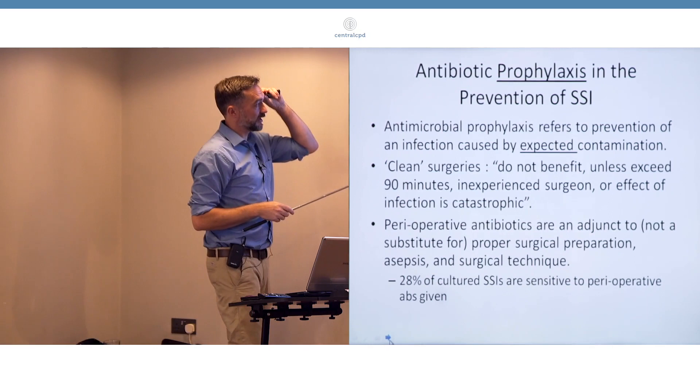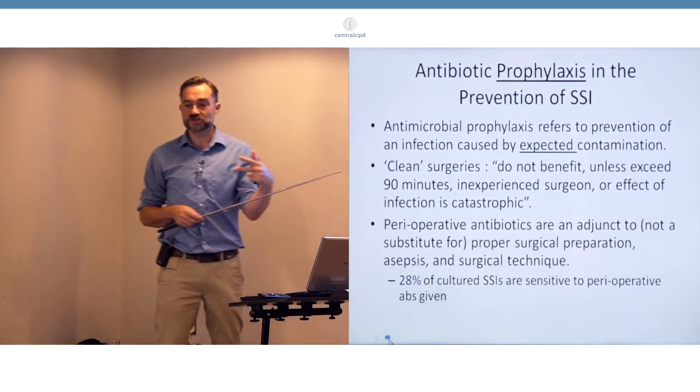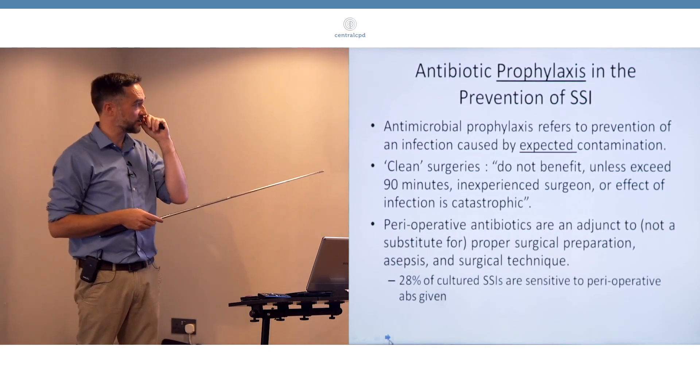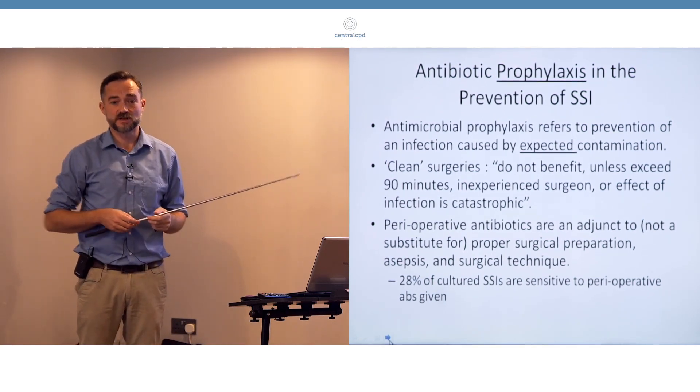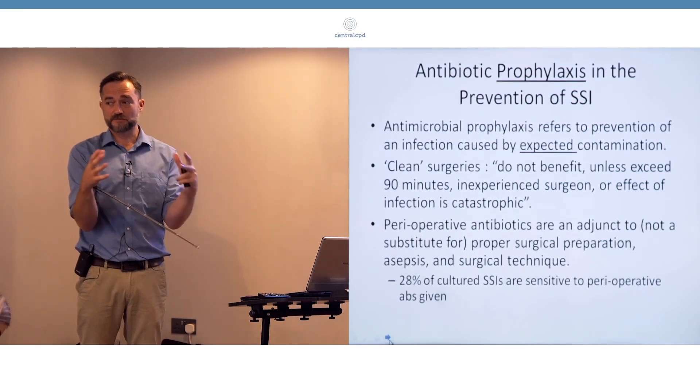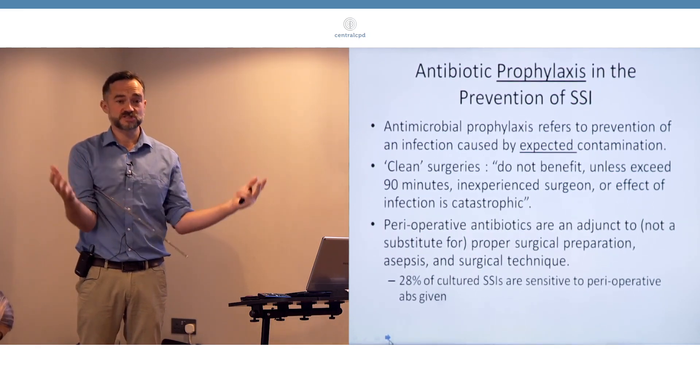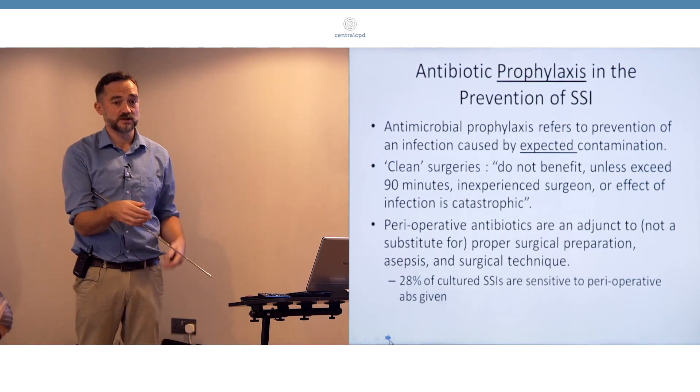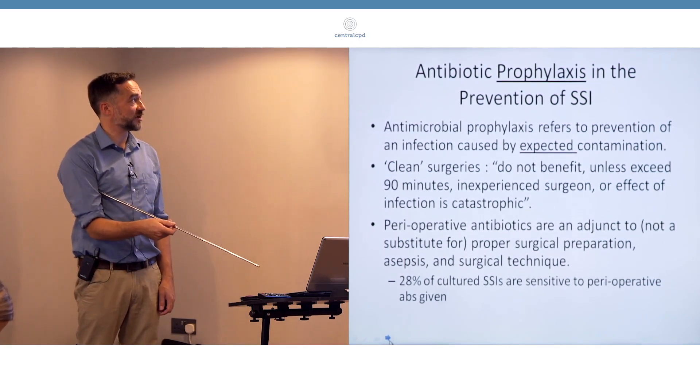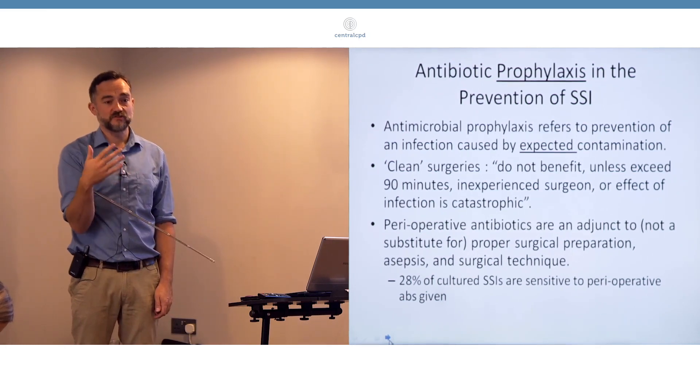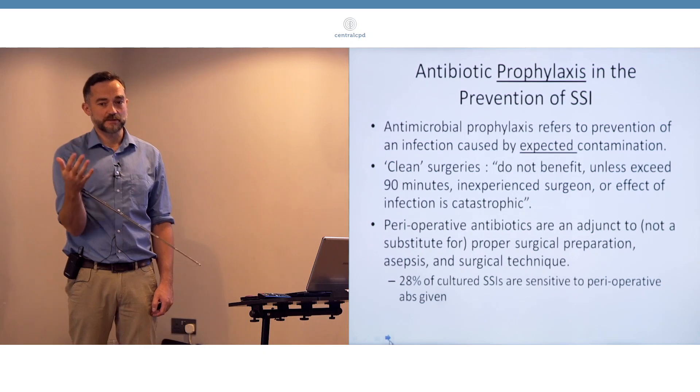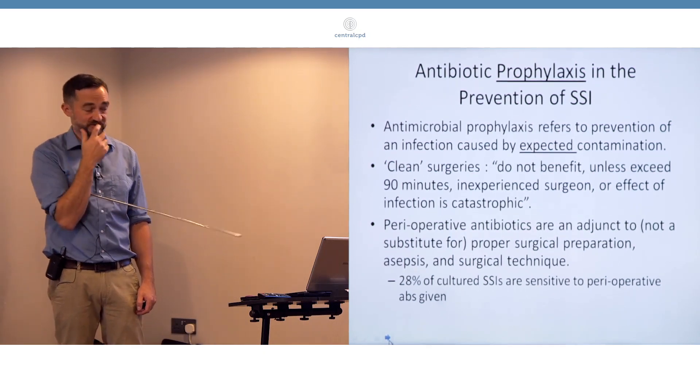We may think about that where we know we're going to encounter bacteria. In our example, we're taking this foreign body out of the small intestine. We know there's going to be some contamination. It should be controlled with laparotomy pads and bowel clamps, but we are going to encounter bacteria during that procedure. So in terms of antibiotic prophylaxis, we're going to give antibiotics before the contamination happens so that we try and kill the contamination with our high levels of antibiotics before it becomes established.